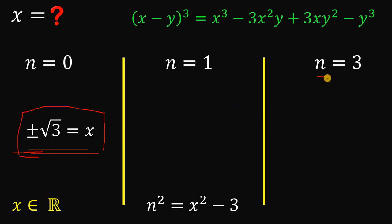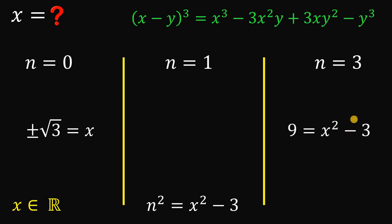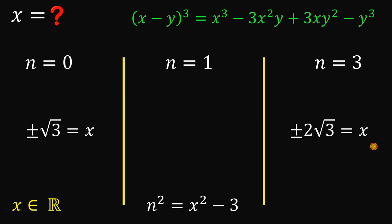For case 3, n equals 3: substituting into n squared equals x squared minus 3 gives 3 squared equals x squared minus 3, so 9 equals x squared minus 3. Adding 3 to both sides gives x squared equals 12. Taking the square root gives x equals positive or negative square root of 12, which simplifies to positive or negative 2 times square root of 3.